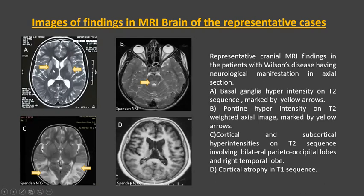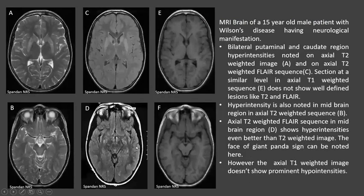Representative cranial MRI findings: Image A shows basal ganglia hyperintensity on T2 sequence. Image B shows pontine hyperintensity on T2-weighted axial image. Image C shows cortical and subcortical hyperintensity on T2 sequence involving bilateral parietal-occipital region and the right temporal lobe. Image D is a T1-weighted sequence showing cortical atrophy.